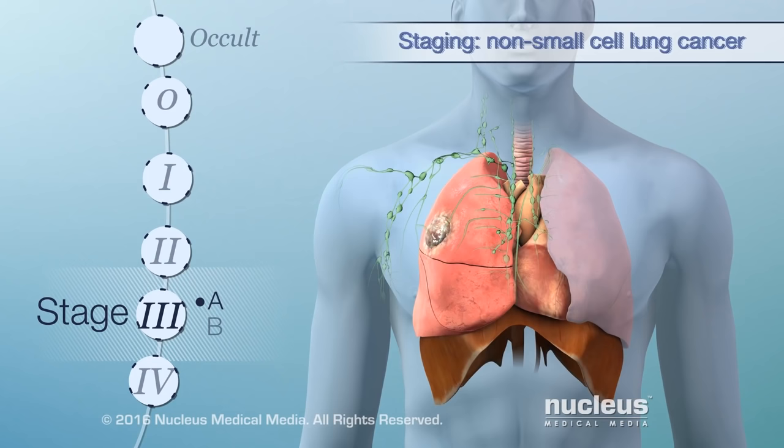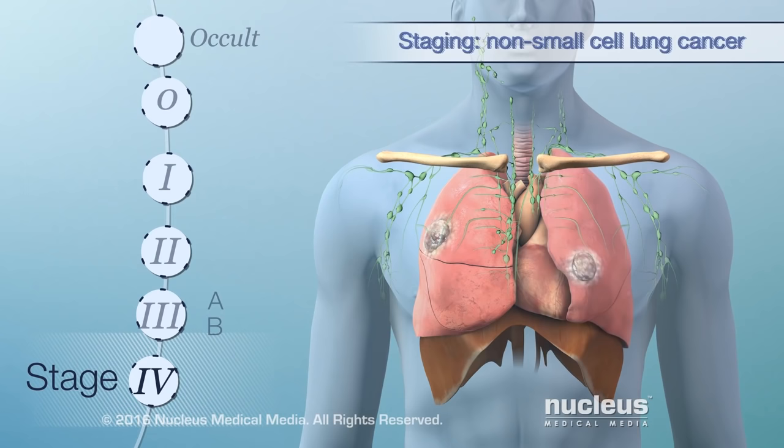Stage 3b is similar to 3a, but in 3b, cancer is found in lymph nodes on the opposite side of the chest. Cancer may also be found in lymph nodes above the collarbone. In stage 4, tumors might be found in both lungs, and cancer may have spread to distant organs.